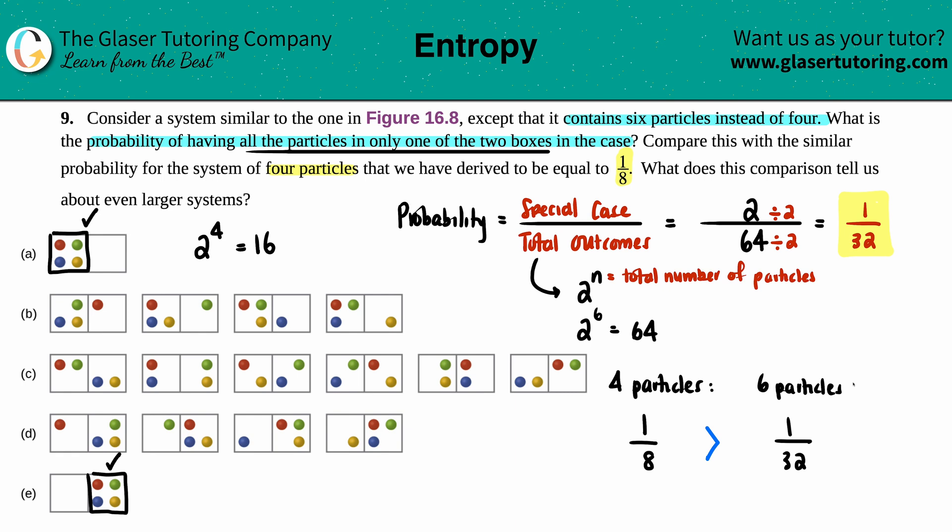So what does this comparison tell us about even larger systems? If we even increase this up to be even larger, like 20 or 200, this probability would be even smaller.